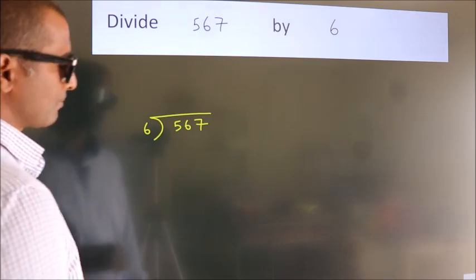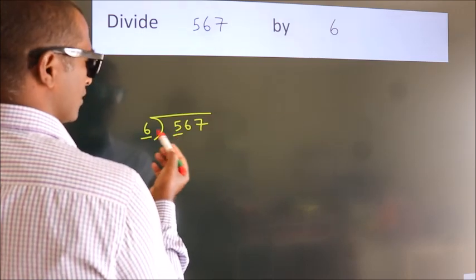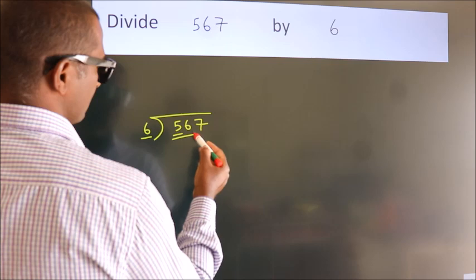Next, here we have 5, here 6. 5 is smaller than 6, so we should take 2 numbers: 56.